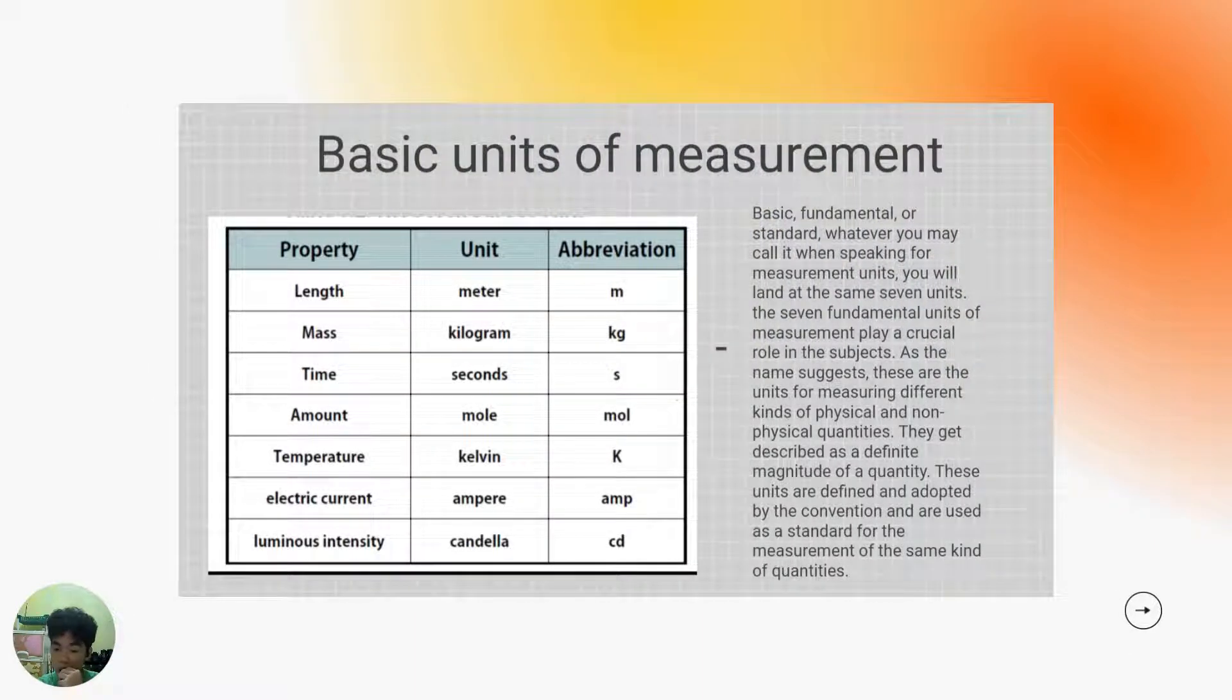Basic units of measurement or SI base units are the standard units of measurement defined by the International System of Units. They are the second for time, the meter for length or distance, the kilogram for mass, the ampere for electric current, the kelvin for thermodynamic temperature, the mole for amount of substance, and candela for luminous intensity.